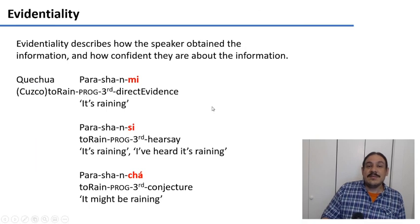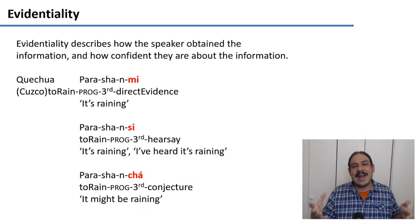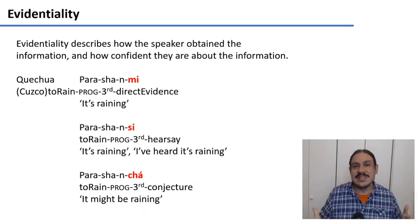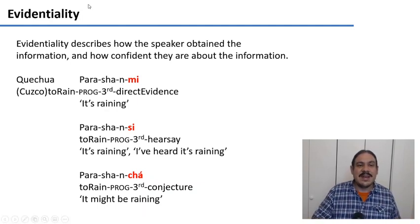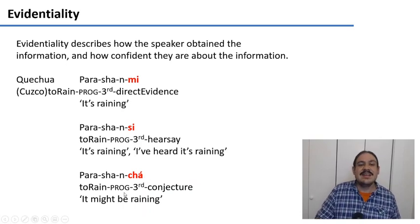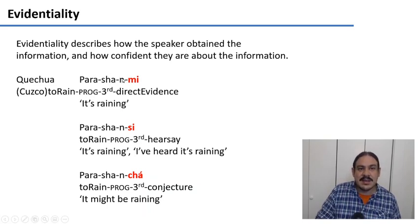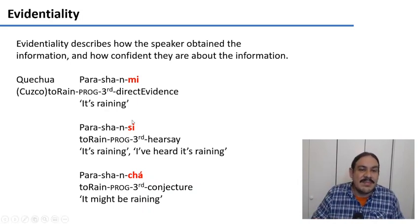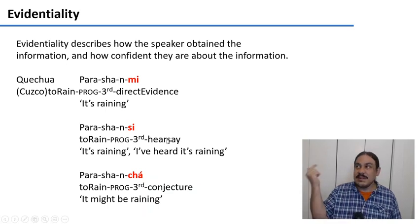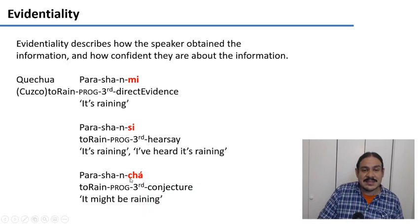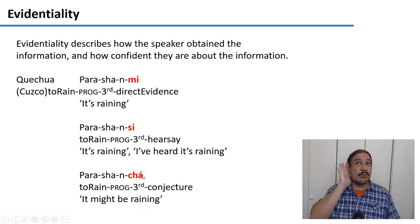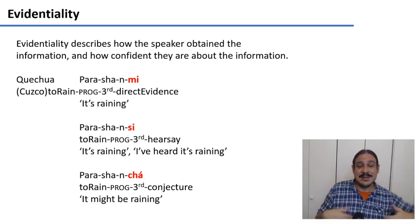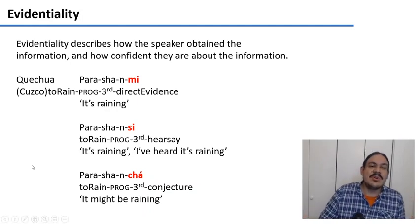Finally, many languages mark evidentiality, which is a description of how I obtained the information or how confident I am of what I'm saying. In Quechua, for example, you can have parashanmi, parashansi, parashancha. 'Para' is the root to rain, 'sha' is the progressive aspect, the 'n' is third person, and then 'mi' tells you that this is direct evidence — it's raining and I'm telling you because I just got some water on me. 'Parashansi' means hearsay — I've been told it's raining. 'Parashancha' has the conjecture evidential — maybe I hear something on the roof, or I know at this time of day it should be raining, so I say 'parashancha' — it might be raining, it's probably raining. These are markers of evidentiality, and Turkish has them too.